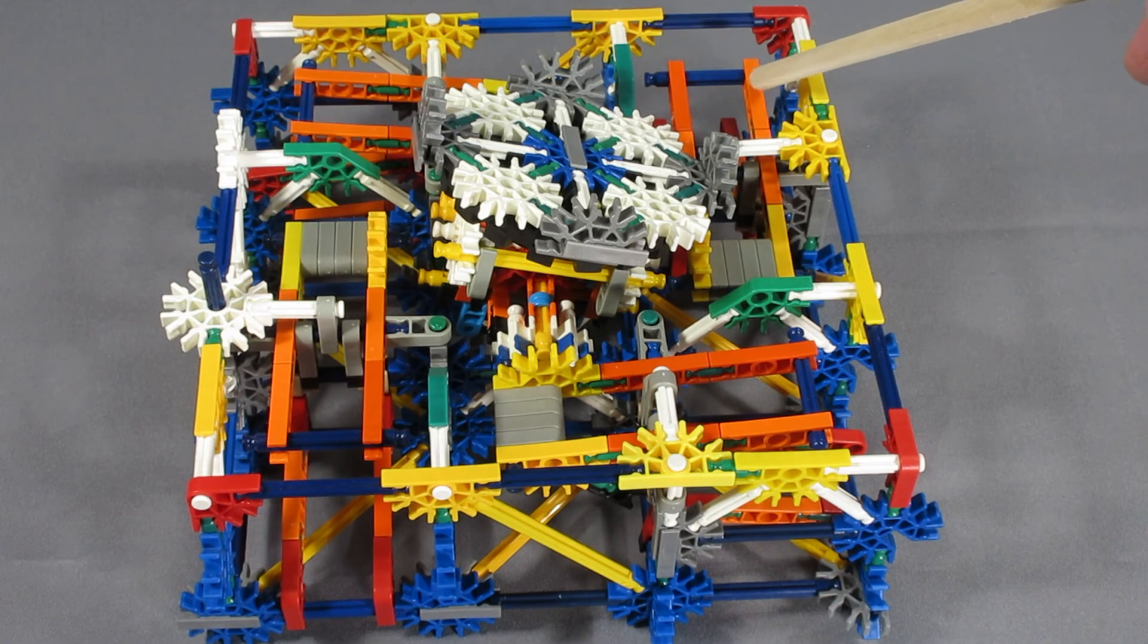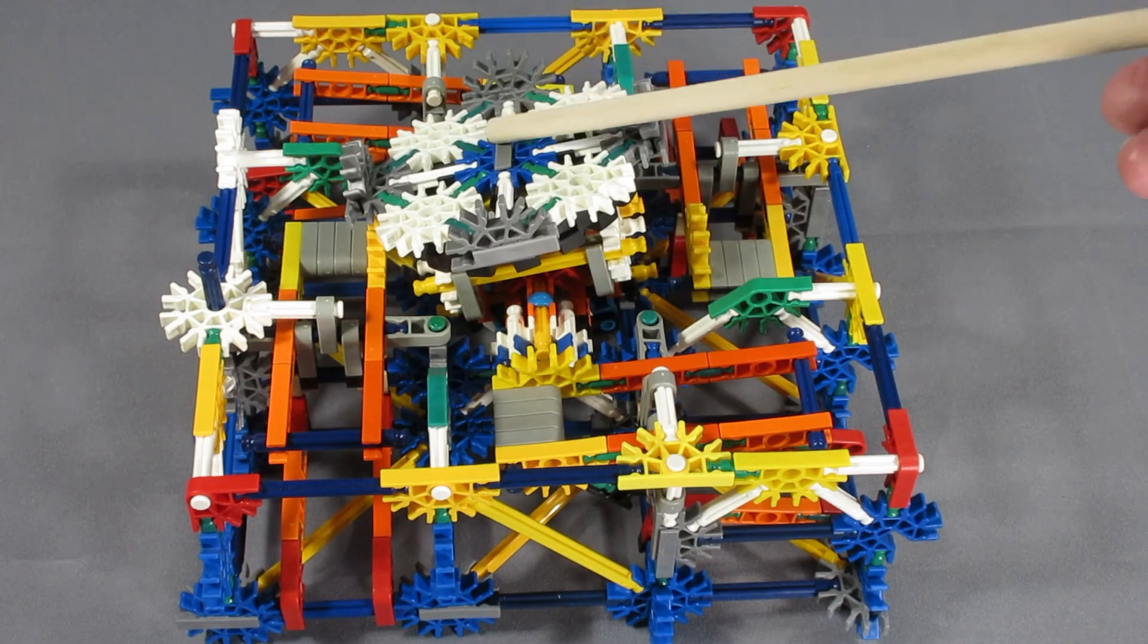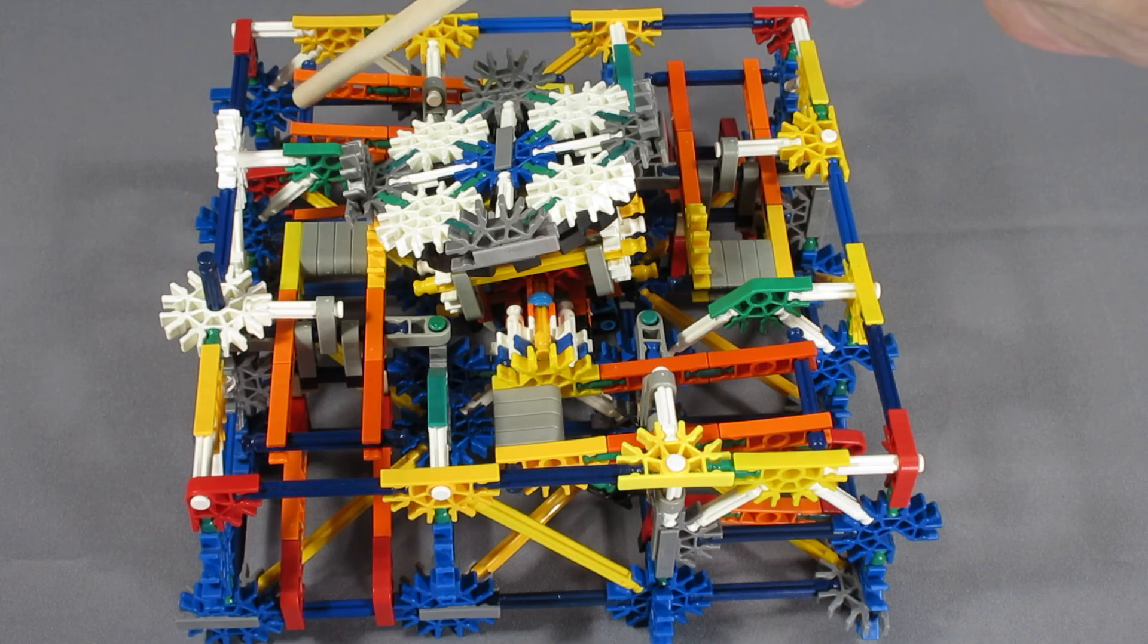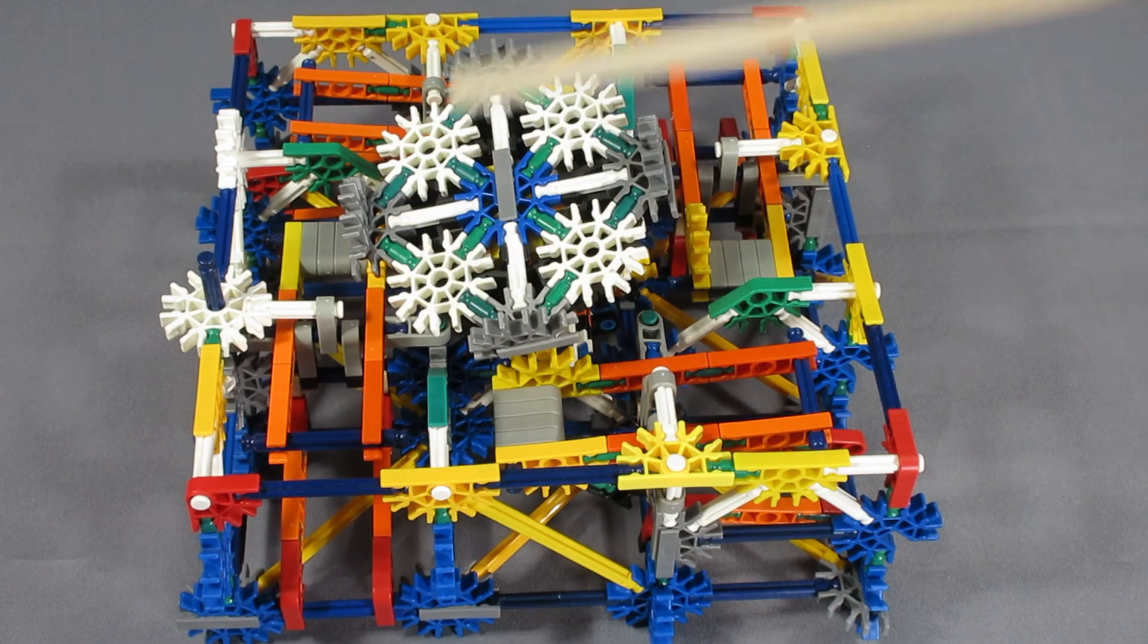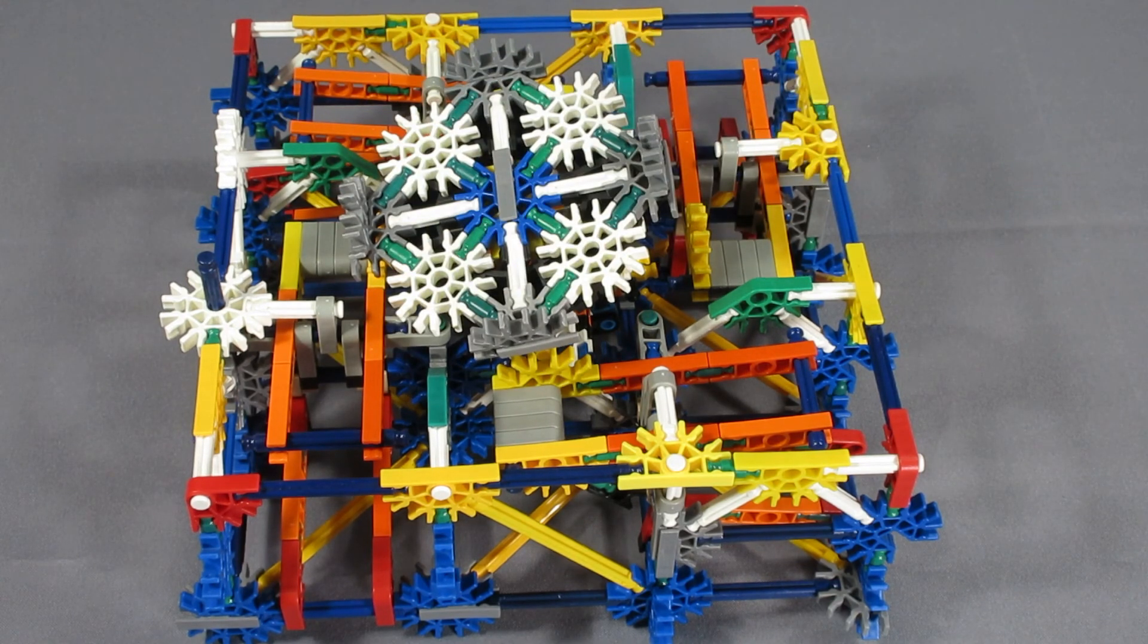Ball comes down, sets that one, moves it over to this side. Ball comes down again, clicks down that one, and it's back to the beginning. So that's the mechanism of the four-way path separator.